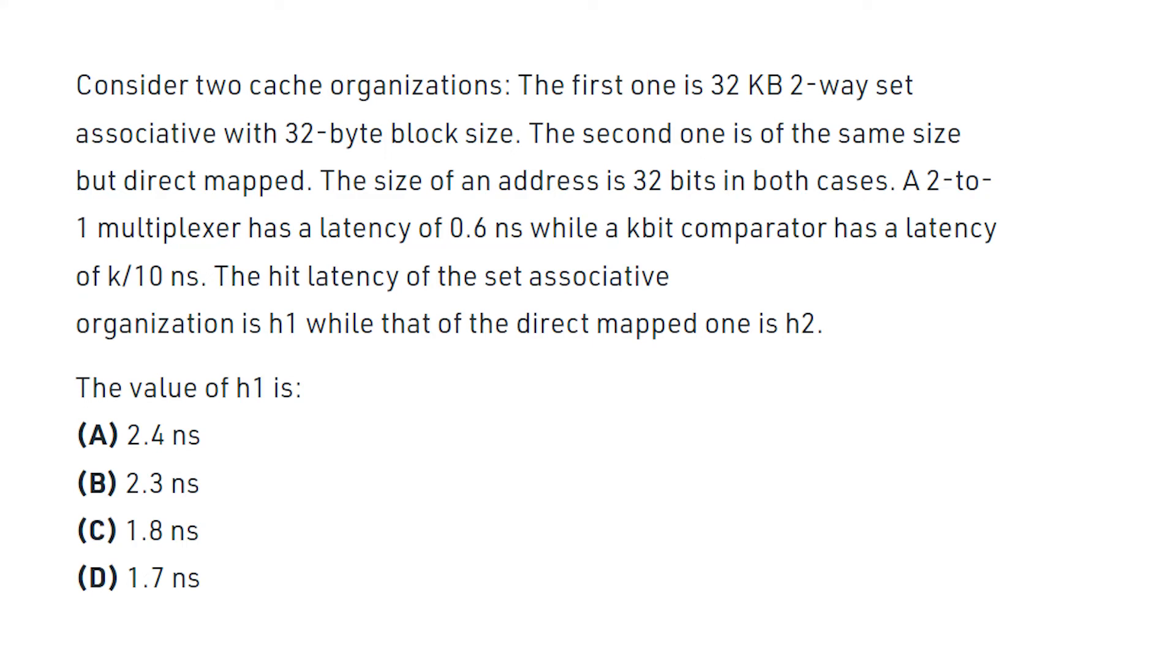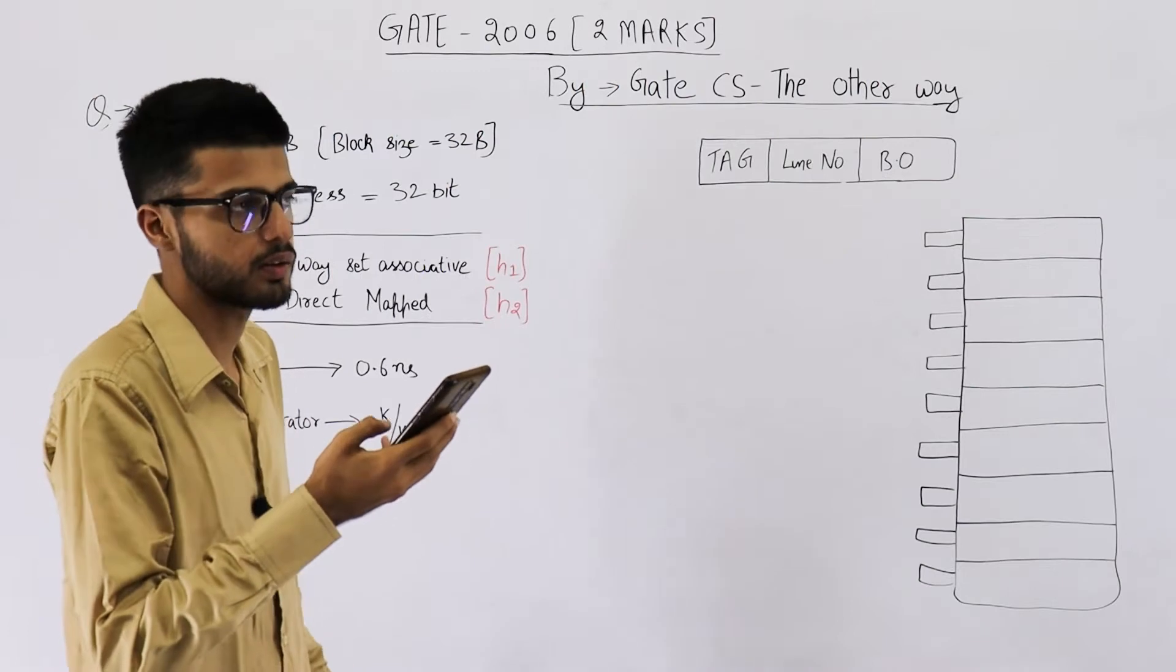Consider two cache organizations. First one is 32 KB, two-way set associative with 32 byte block size. The second one is of same size but direct mapped. The size of an address is 32 bits in both cases. A two to one multiplexer has a latency of 0.6 nanoseconds, while a k-bit comparator has a latency of k by 10 nanoseconds. The hit latency of set associative organization is h1, while that of direct mapped is h2. The value of h1 is, and the second part of this question says value of h2 is.